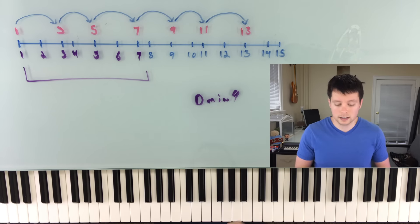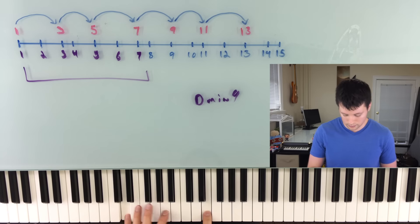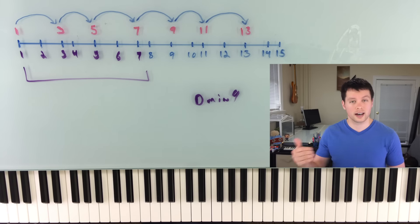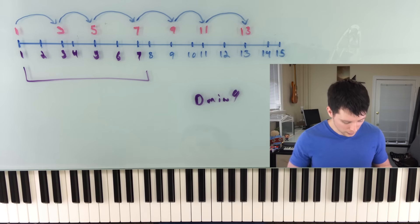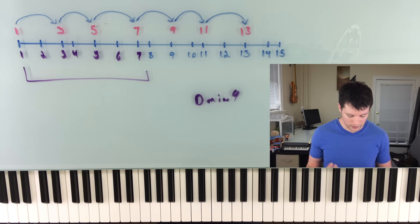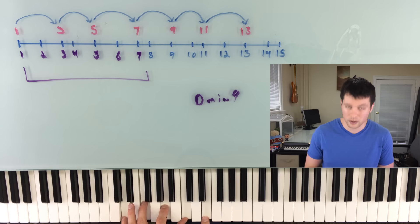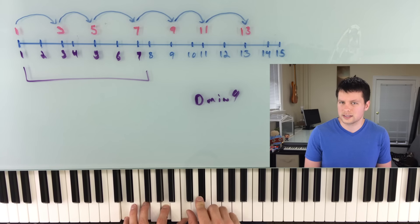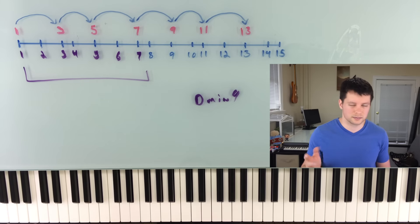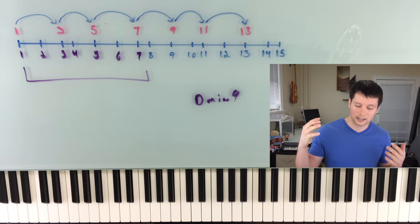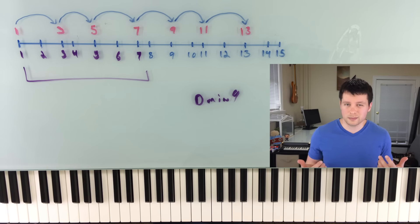So the obvious question is how do you change these notes? How do you move the nine or the 11th around? Now, technically, this nine that I played, that one right there, technically that's a major nine. The nine works the same way that a major third and a minor third does. There's a major nine. If we lowered it, it'd be a minor nine. If we raised it, it'd be an augmented nine. But you pretty much never talk about it that way. It'd be really confusing.